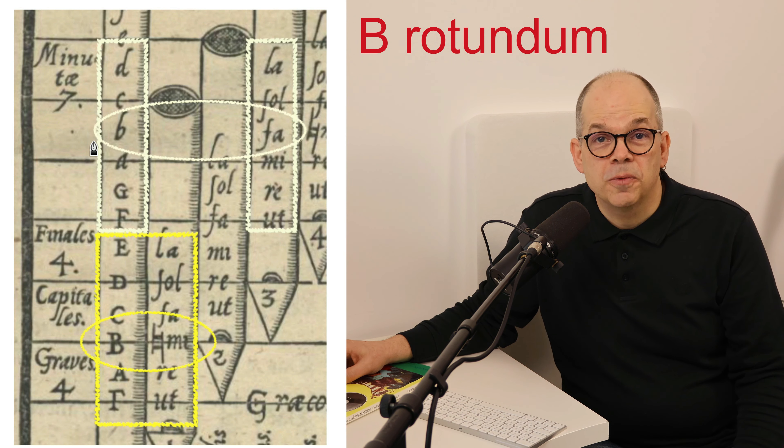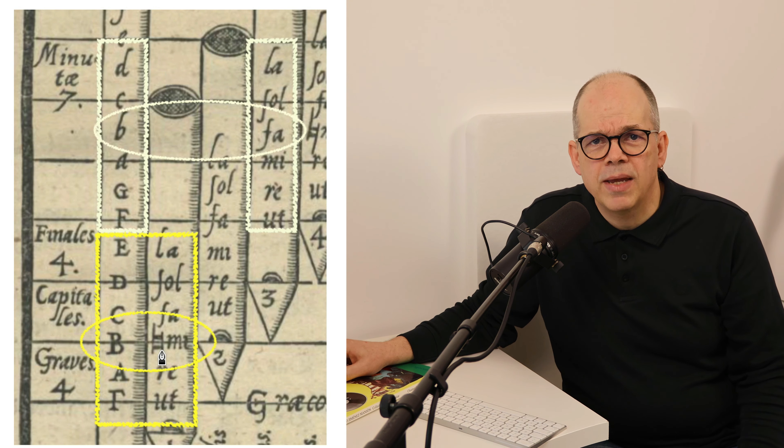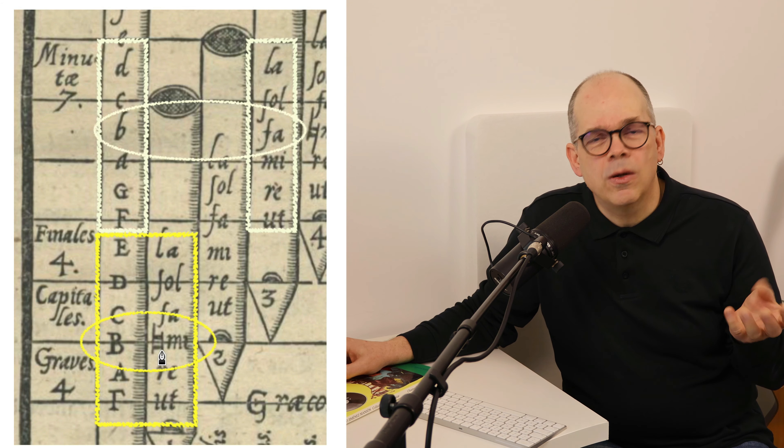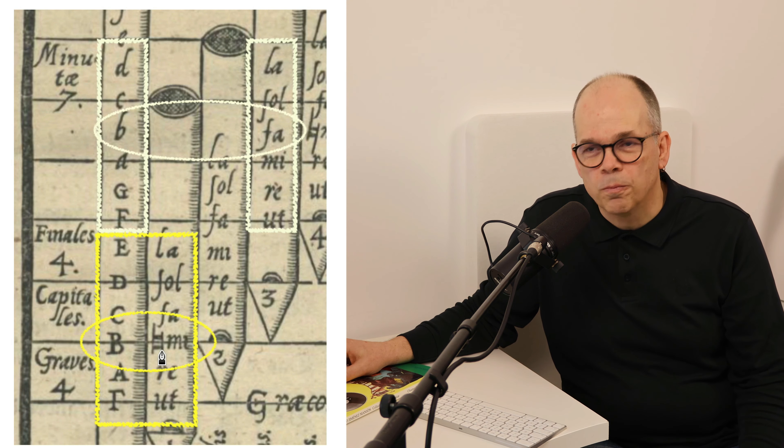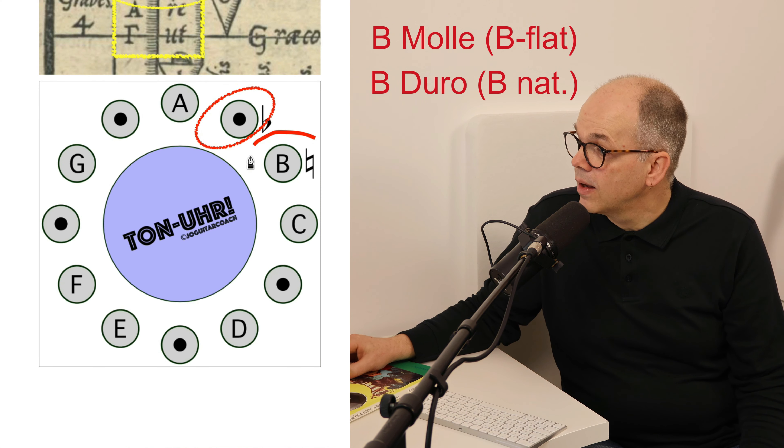also called B molle, which means soft, the soft B. Meanwhile this B has been the B in square, the B quadratum or B hart, B durum. So we had actually two different names for B. B molle, which is this, e B duro, hart B, B, which is this,